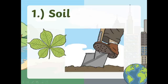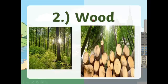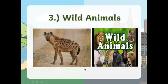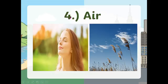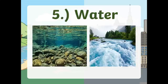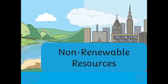Number one: soil. Number two: wood — wood in the forest. Number three: wild animals. Number four: air — air is a renewable resource. Number five: water — water is also a renewable resource.